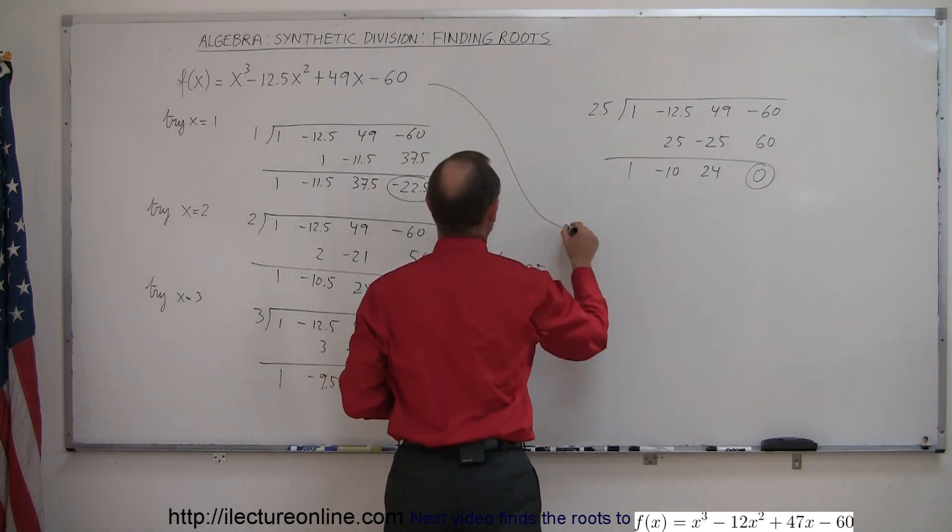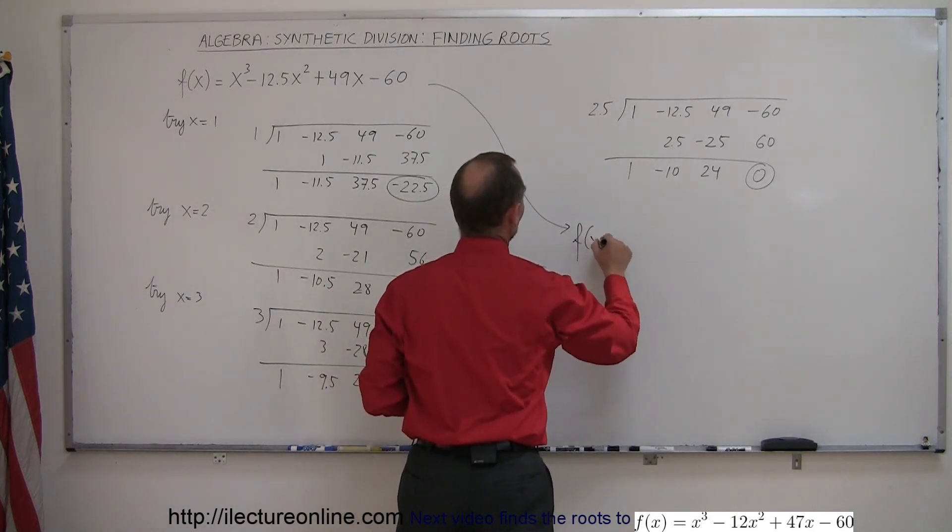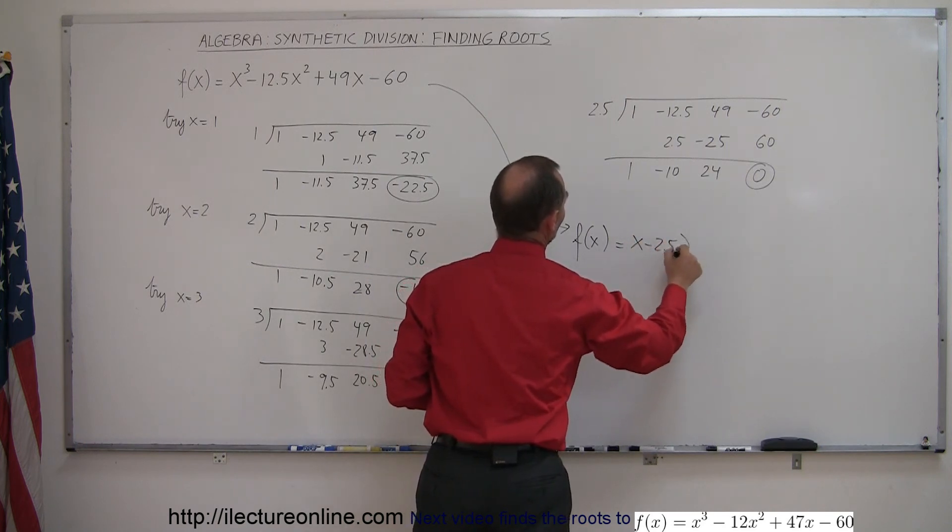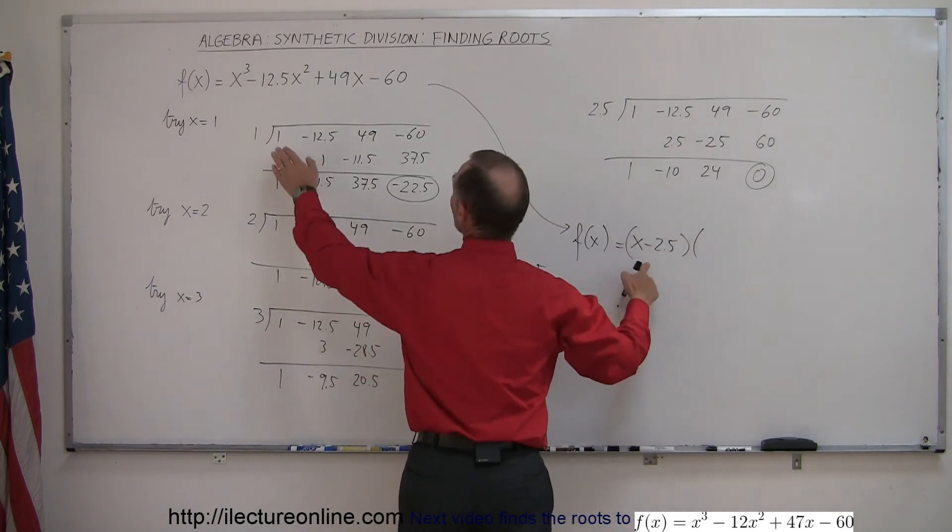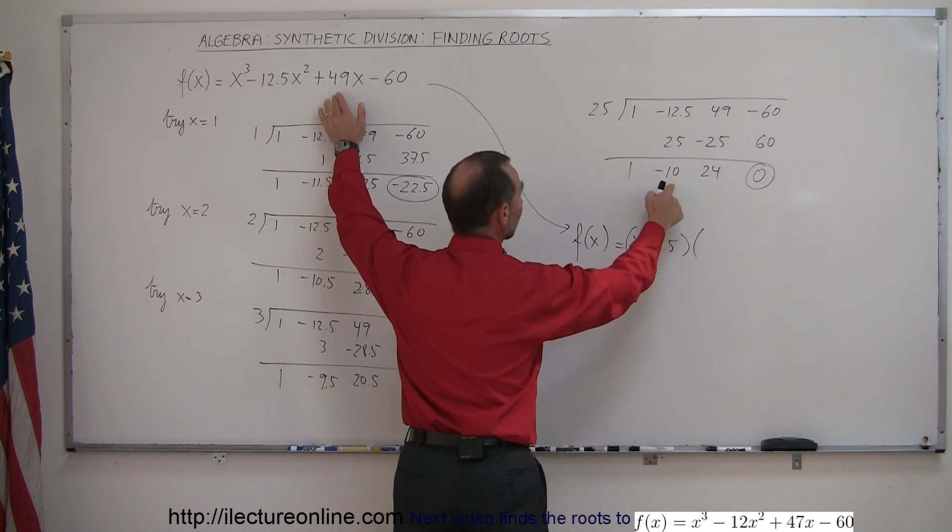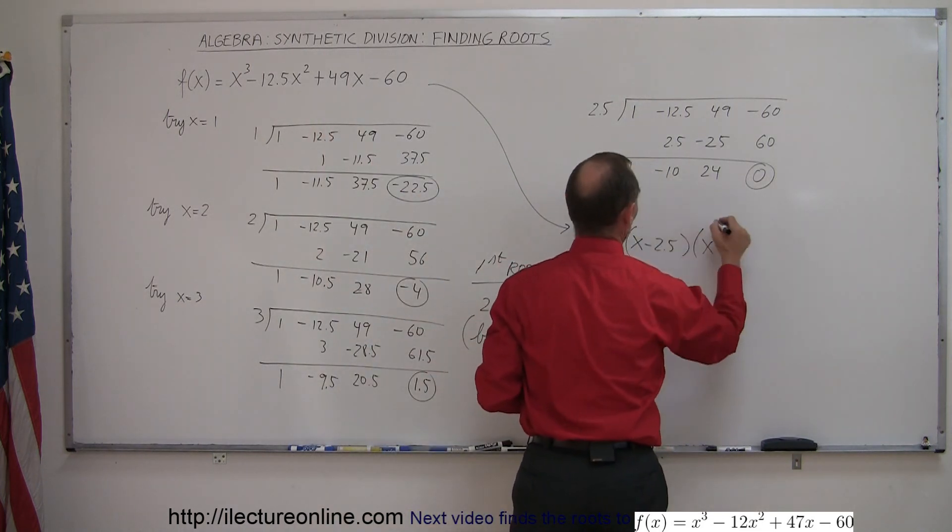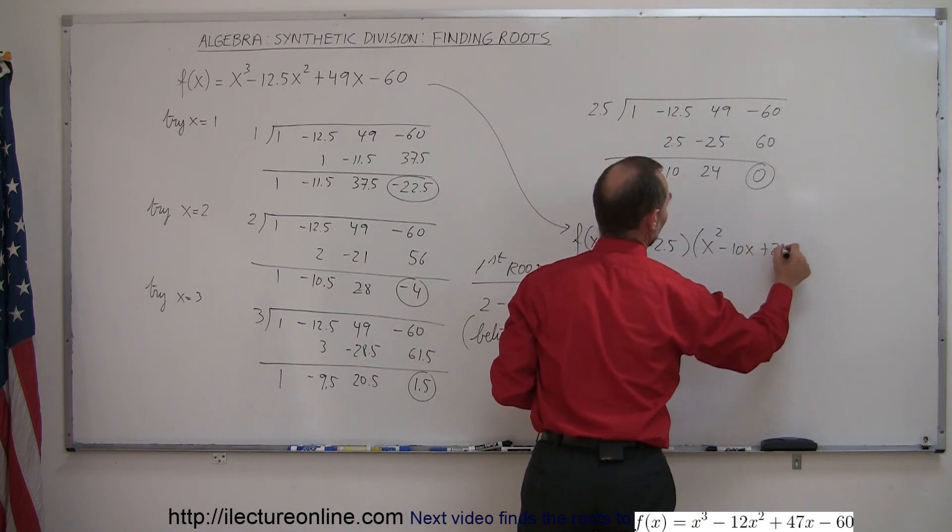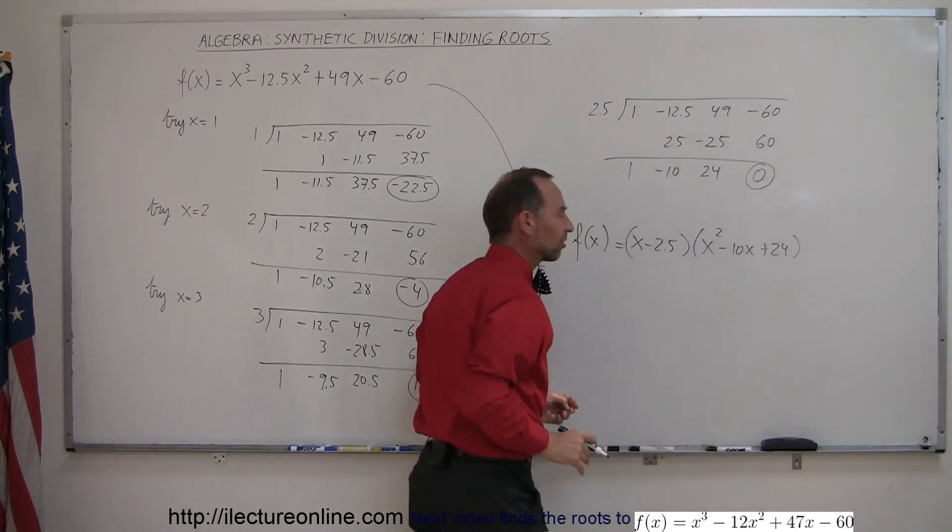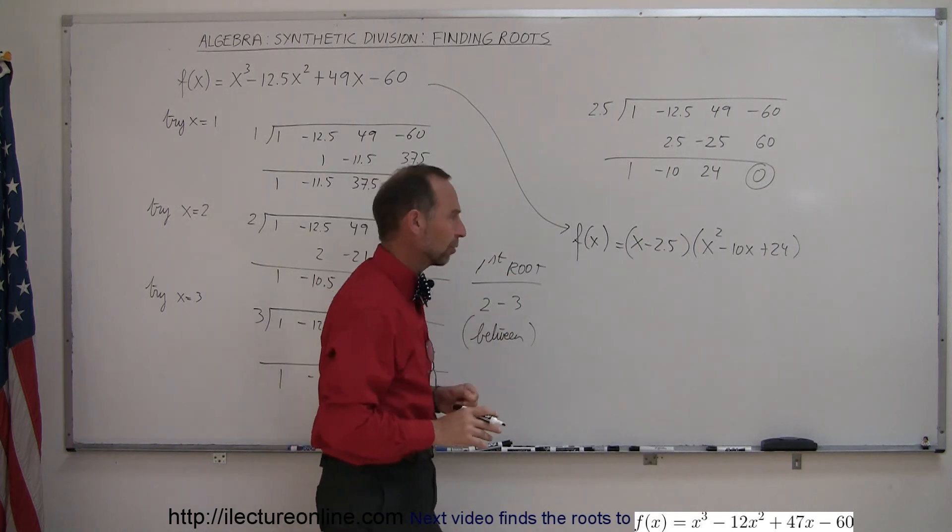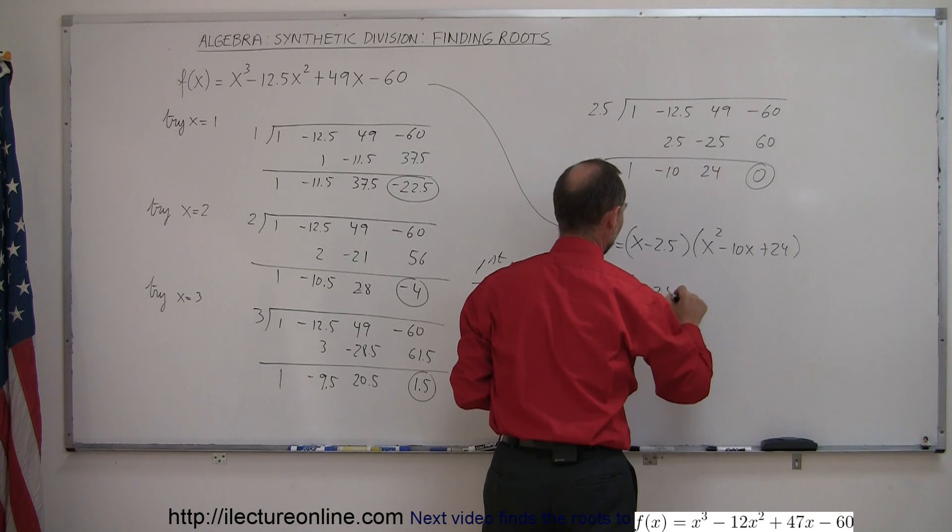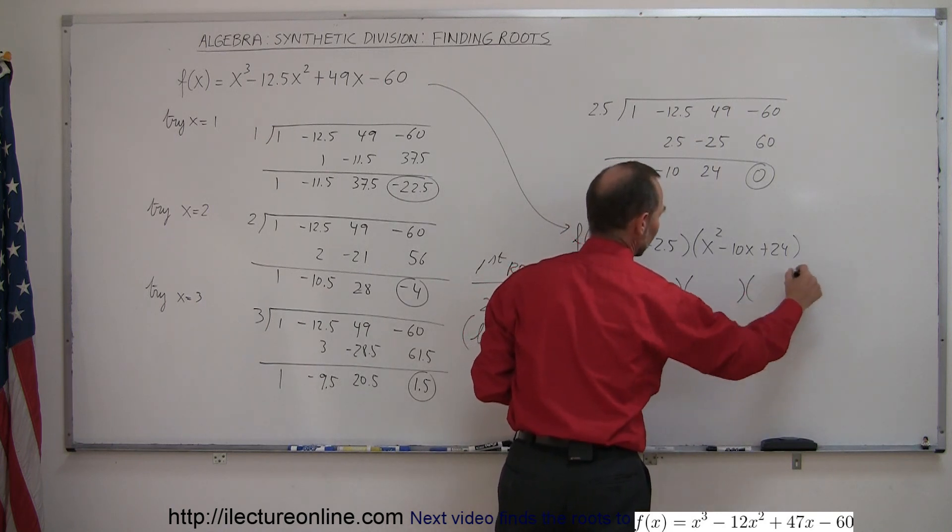We can take this function and write it as the product of x minus 2.5 times what's remaining. To find the other coefficients to make up this polynomial, we get x squared minus 10x and plus 24. In this case, it looks like we can find the roots of what's remaining using the factor technique.